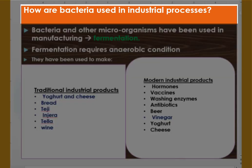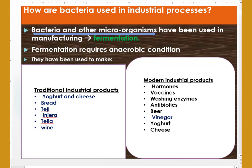How are bacteria used in industrial processes? Bacteria and other microorganisms have been used in manufacturing processes by human beings for thousands of years through fermentation. Fermentation is the breakdown of carbohydrates into organic acid, alcohol, and carbon dioxide using bacteria and yeast cells. These yeast cells and bacteria need an aerobic condition to work well.